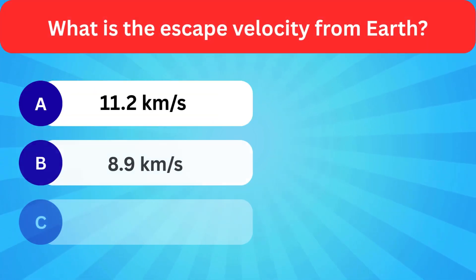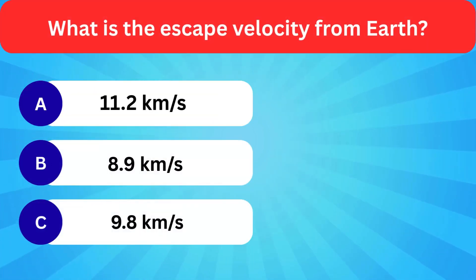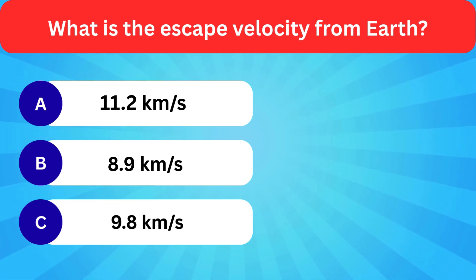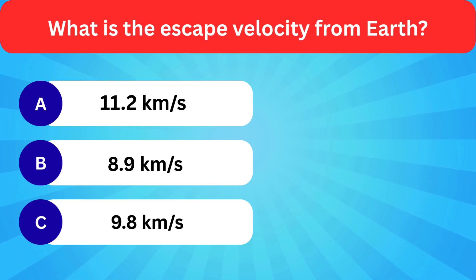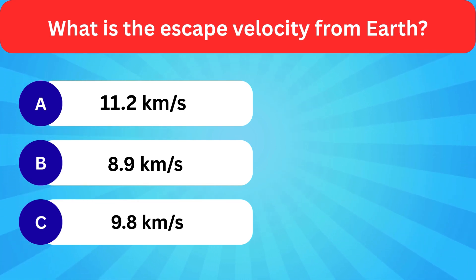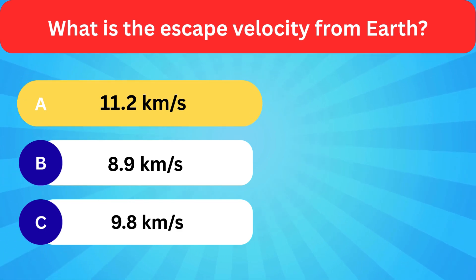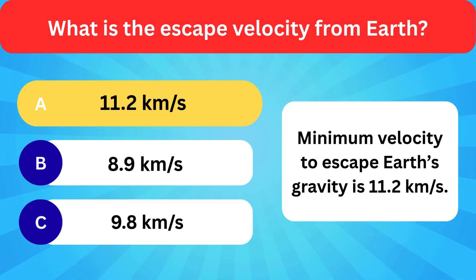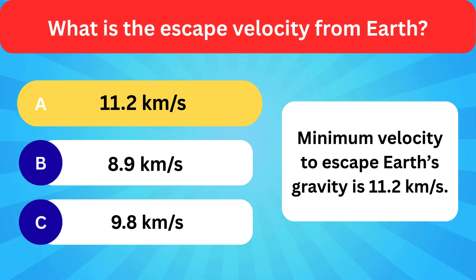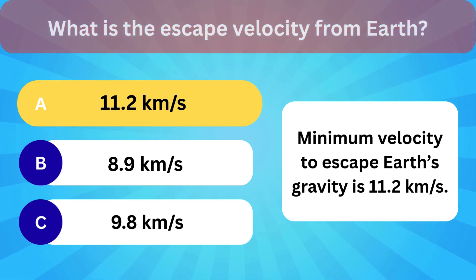What is the escape velocity from Earth? Options: 11.2 km/s, 8.9 km/s, 9.8 km/s. Correct answer is 11.2 km per second. Minimum velocity to escape Earth's gravity is 11.2 km per second.